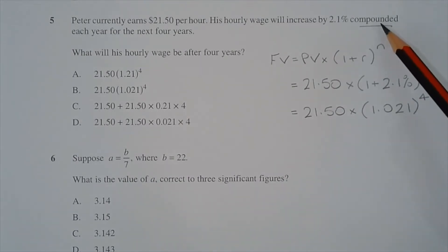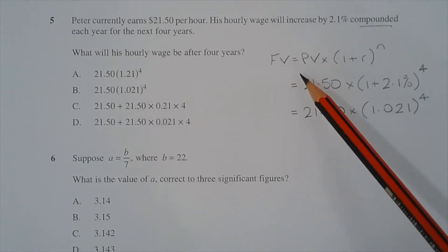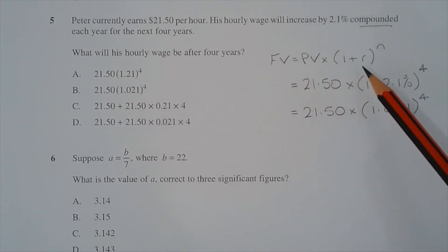The key word is compounded, so we'll use the compound interest formula to determine Peter's wage in 4 years time. The future value is equal to present value multiplied by 1 plus r to the power of n.